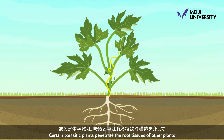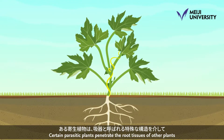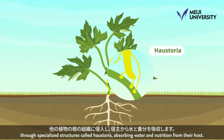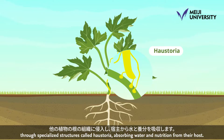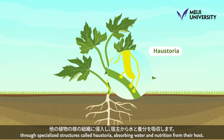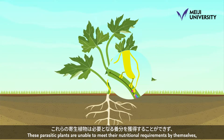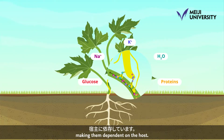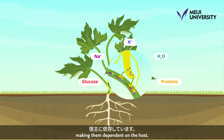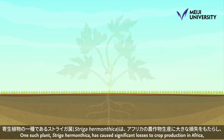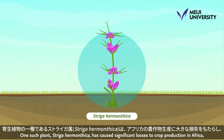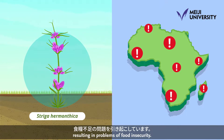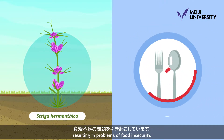Certain parasitic plants penetrate the root tissues of other plants through specialized structures called haustoria, absorbing water and nutrition from their host. These parasitic plants are unable to meet their nutritional requirements by themselves, making them dependent on the host. One such plant, Striga harmonthica, has caused significant losses to crop production in Africa, resulting in problems of food insecurity.